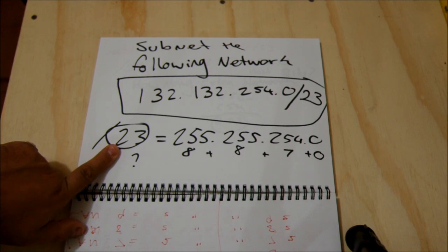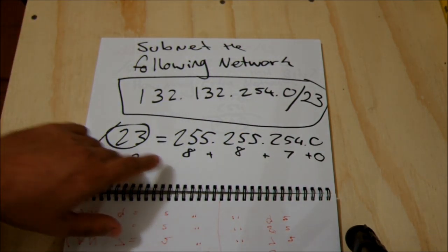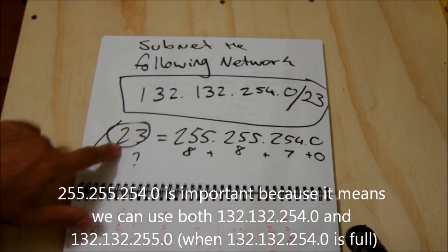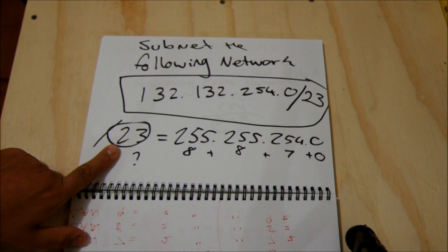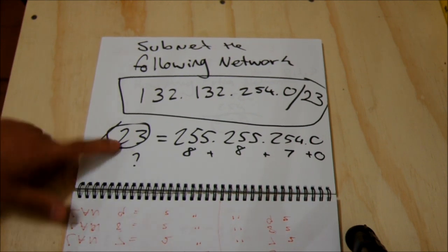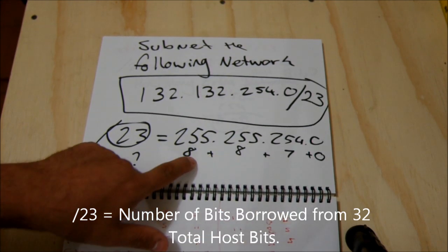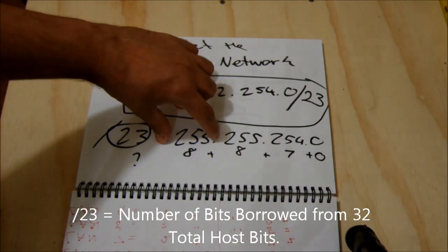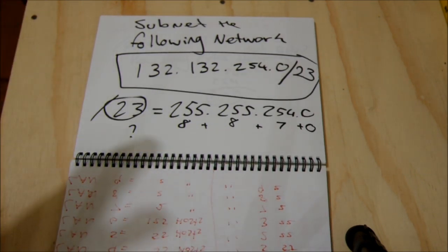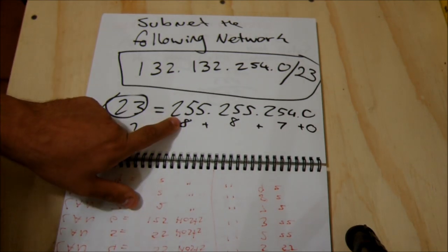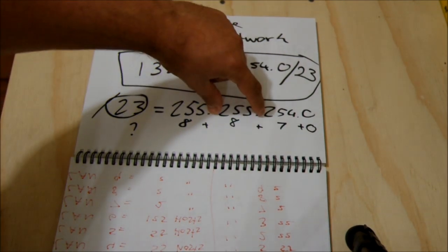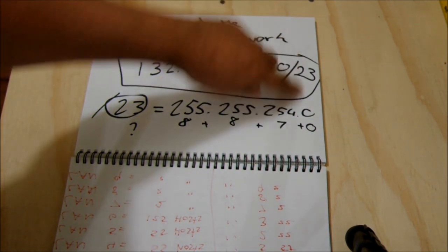Slash 23 equals 255.255.254.0. So 23 is related to the total number of network bits — there are 32 in total. You've got to think of it as a binary number. Each segment is called an octet, and in an octet there are 8 bits. Each bit accounts for a binary value: 1, 2, 4, 8, 16, 32, 64, 128. So 8 plus 8 plus 7 is 23 — meaning 8 bits from the first octet, 8 from the second, 7 from the third, and 0 from the fourth.